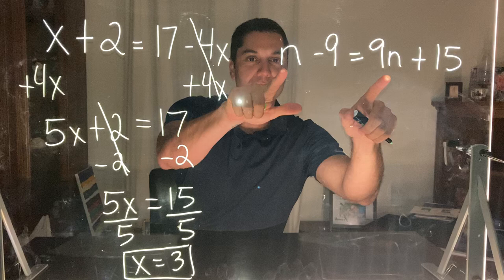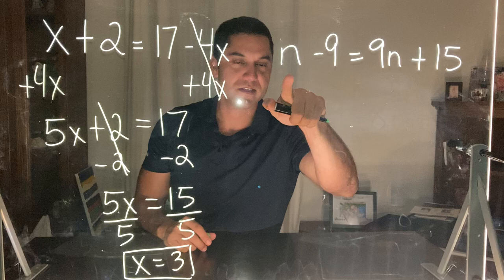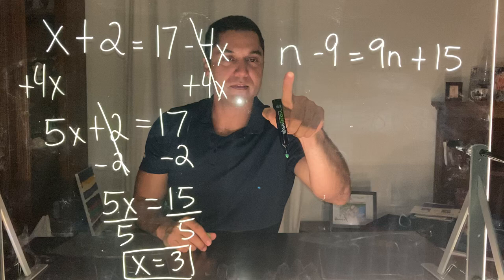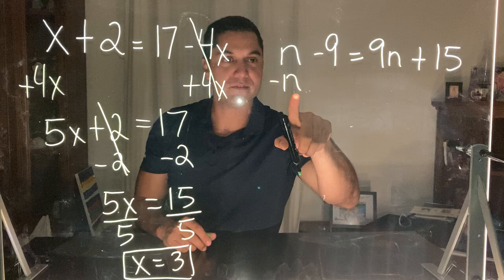In this example again we're going to look at our variable. On the left hand side I have a positive n and on the right hand side I have a positive 9n. So since this side is a lower value of the variable, this is the side I want to cancel out. So to cancel out this positive n, all I have to do is subtract n. If I do subtract it on the left hand side, I have to do the same thing on the right hand side.